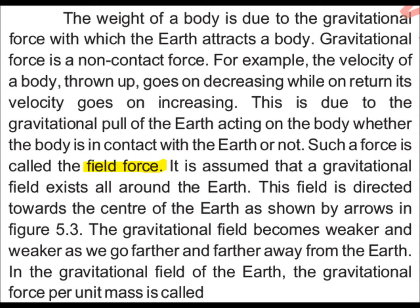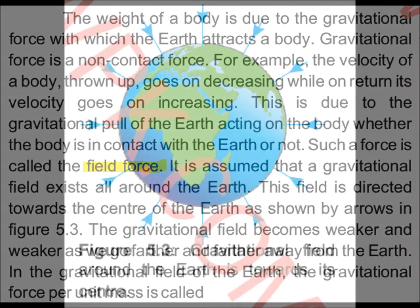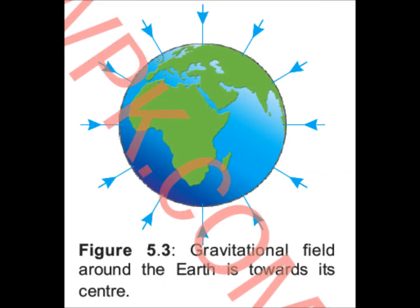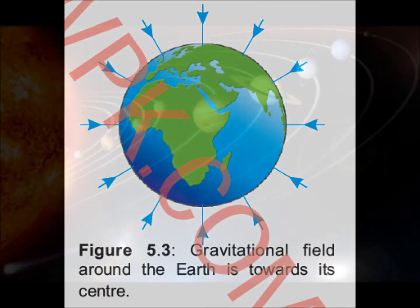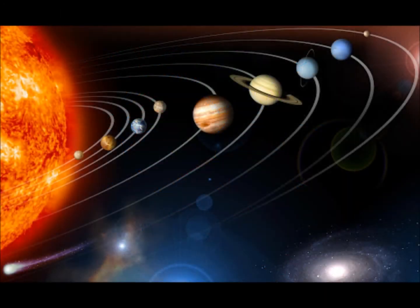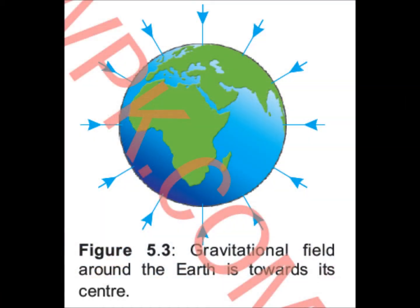It is assumed that a gravitational field exists all around the Earth. That is why the Earth attracts other planets. The planets are revolving, the Sun is also revolving, and the Moon is also subject to this gravitational force.